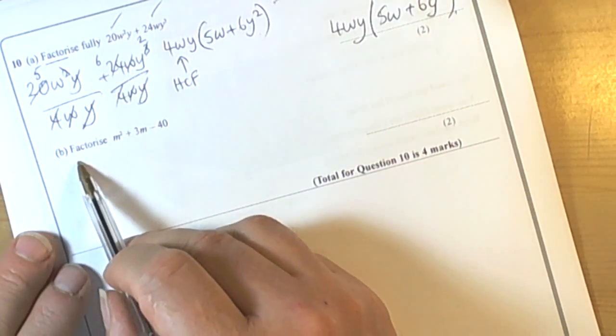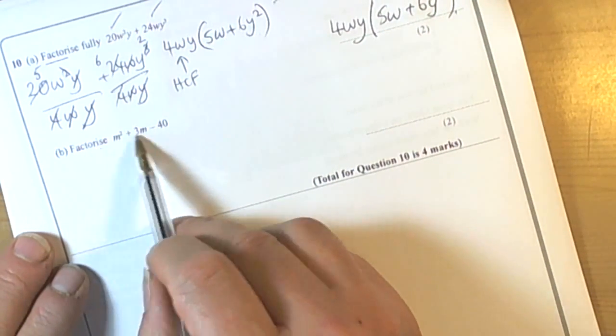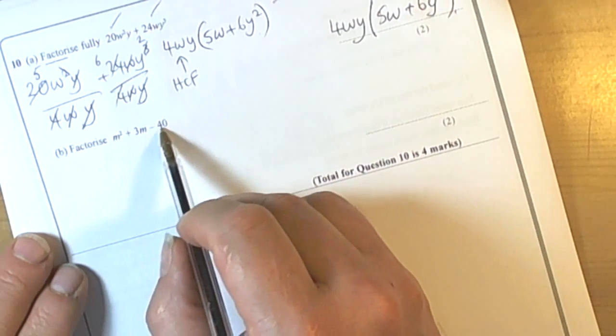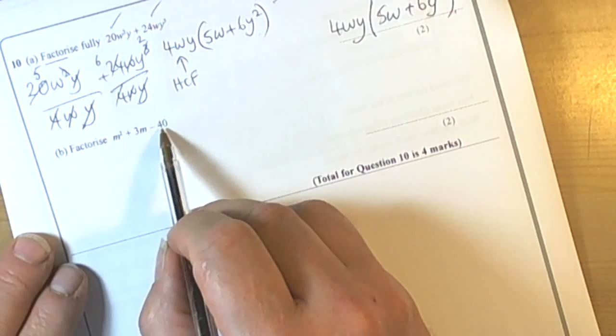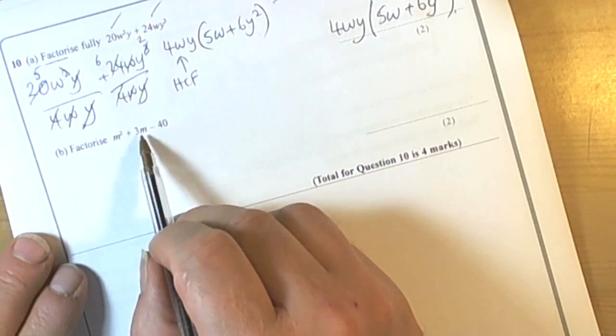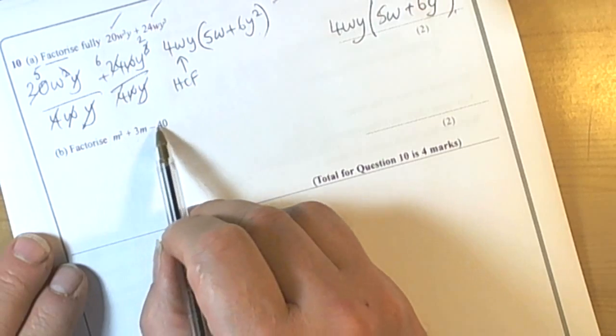Now the second part of this question is asking us to factorise again. So again we're going to be looking to see whether it's a single bracket or a double bracket factorisation. We look at each term and we can see hopefully fairly quickly that there isn't a common term, so we can't do it into a single bracket.